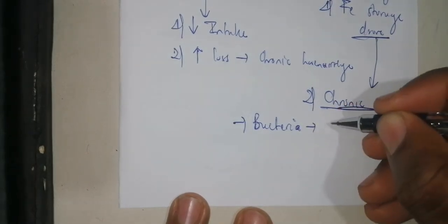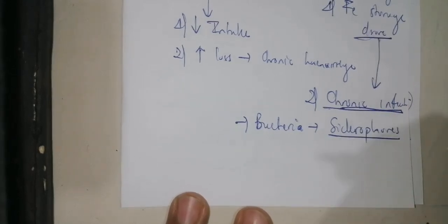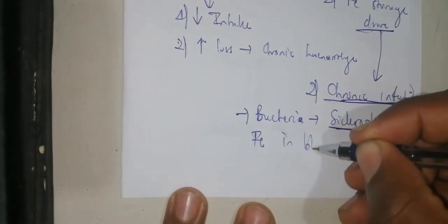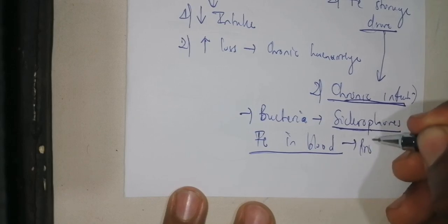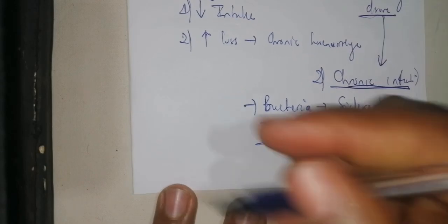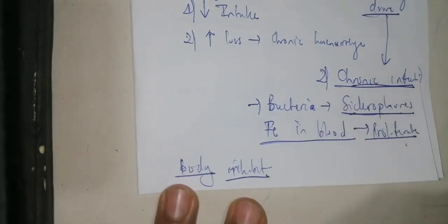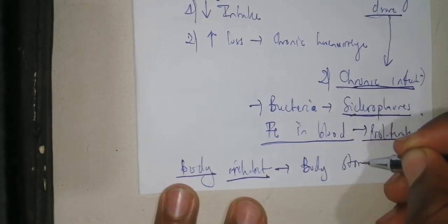In chronic infection, you need to know that bacteria have an enzyme called siderophore. With this siderophore, the bacteria use the iron in blood to metabolize and proliferate. So when you have an infection, the bacteria use siderophore to metabolize iron and proliferate. To inhibit this, the body responds by storing iron away.